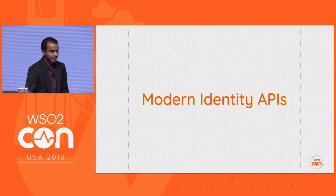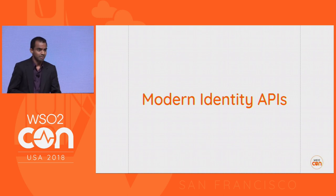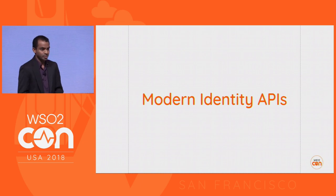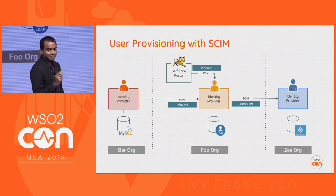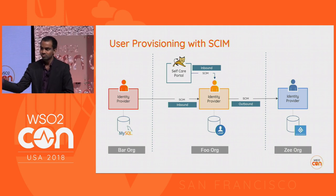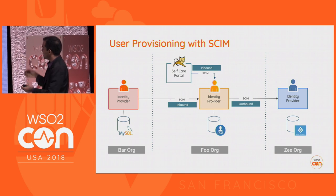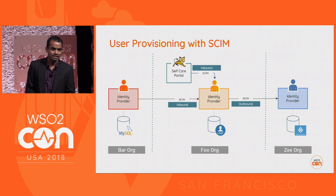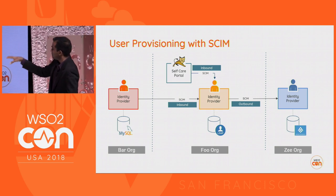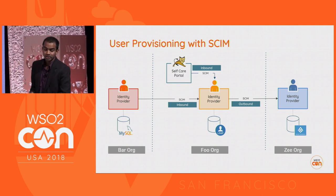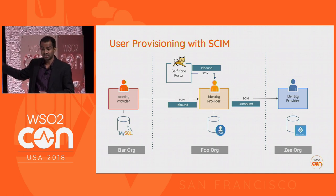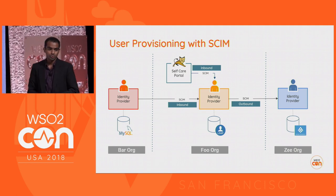We talked about the evolution and why this has become the hottest thing — because of Customer IAM and IoT. Now let's look at some of the modern IAM APIs. SCIM — System for Cross-Domain Identity Management — the name itself tells you it goes cross-domain. There are multiple domains with IAM providers governing different user stores — Active Directories, LDAPs, MySQL databases. A user in one organization may want to access resources in another and needs to be provisioned, including to external API providers.